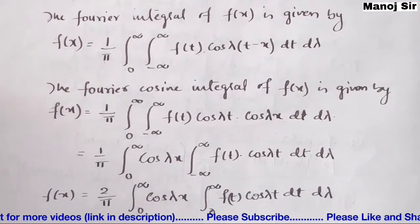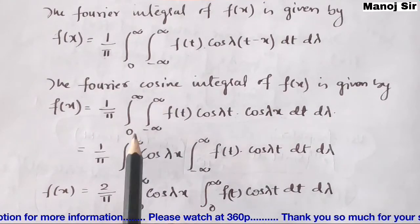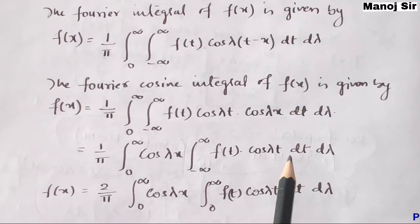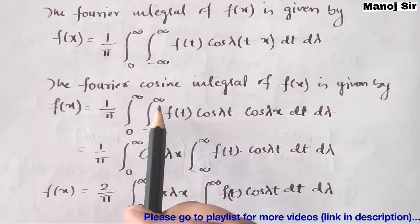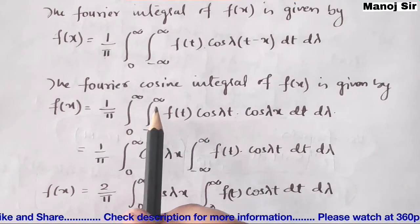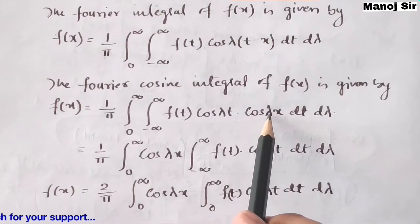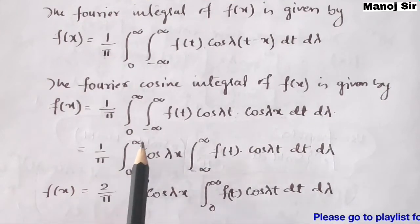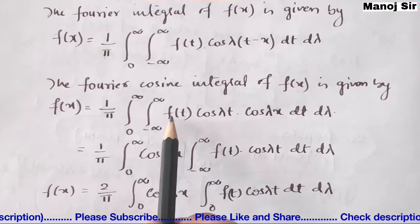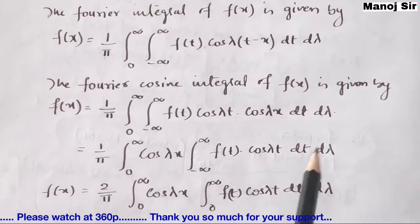The Fourier Cosine Integral of f(x) is given by: (1/π) ∫₀^∞ ∫₋∞^∞ f(t) cos(λt) cos(λx) dt dλ. The limit from minus infinity to plus infinity is for t, and zero to infinity is for λ. Since we integrate with respect to t first, cos(λx) is independent of t and can be taken outside, giving: (1/π) ∫₀^∞ cos(λx) [∫₋∞^∞ f(t) cos(λt) dt] dλ.